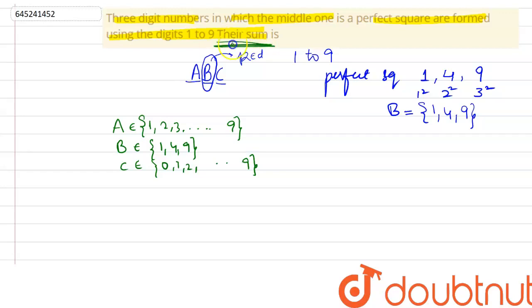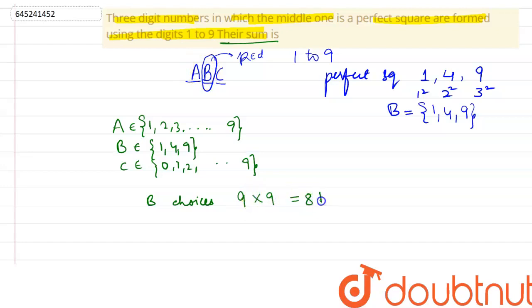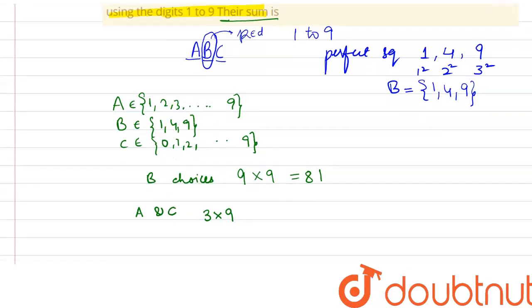We need to find the sum of all possible three-digit numbers formed. Each possible choice of B occurs for 9 choices of A and 10 choices of C. We have 3 choices for B, so for each pair of A and C there are 3 × 9 = 27 combinations — giving us 27 into 9, which is 27 choices contributing per position.